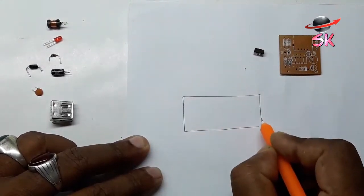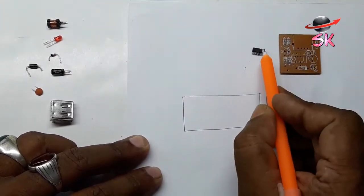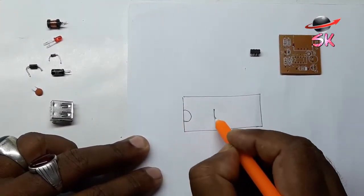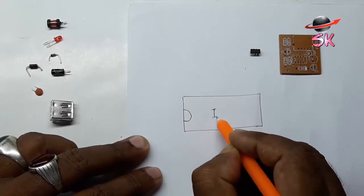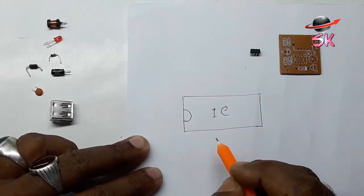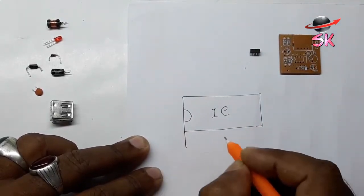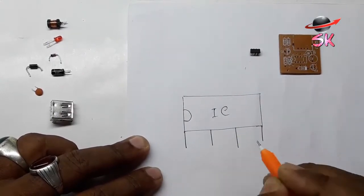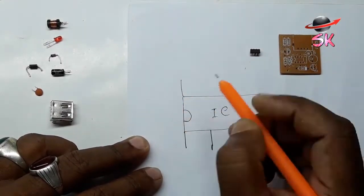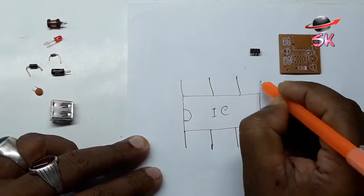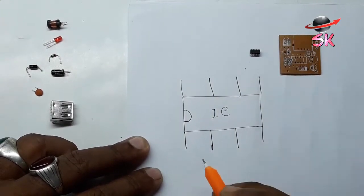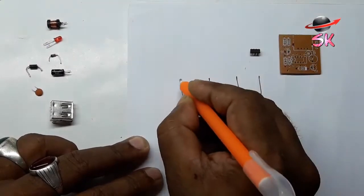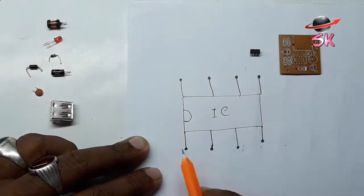Now let's see the circuit diagram. USB mobile phone charger full circuit diagram. IC number LC51.